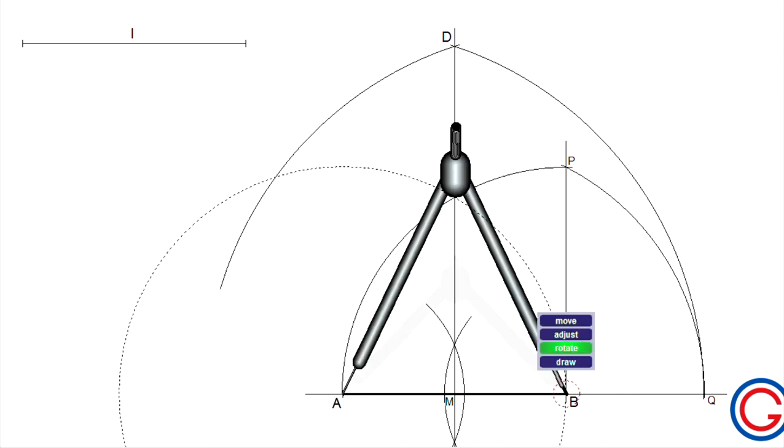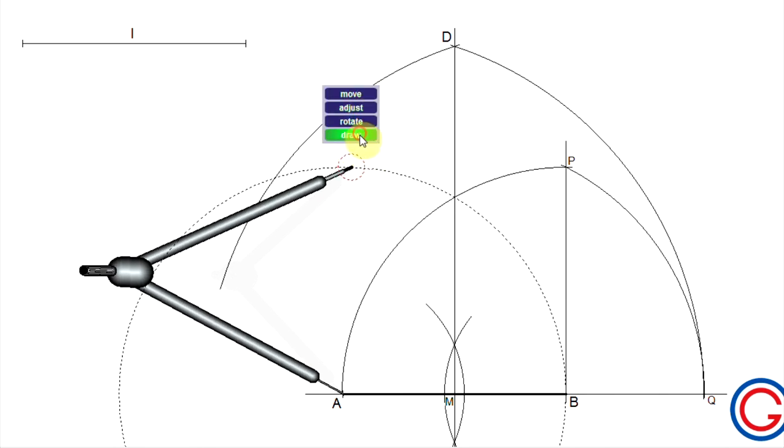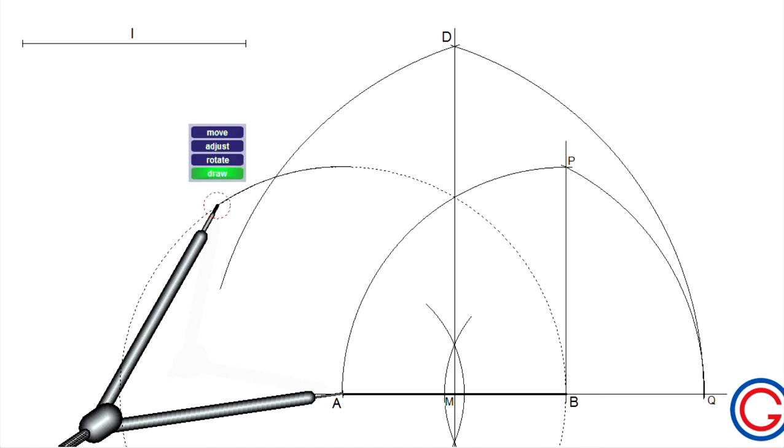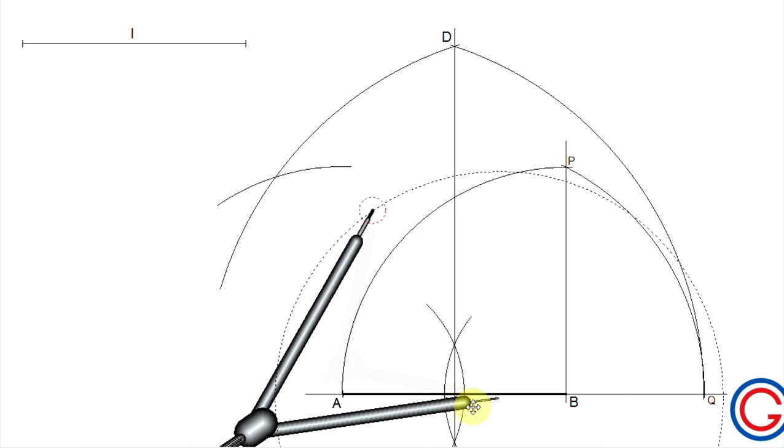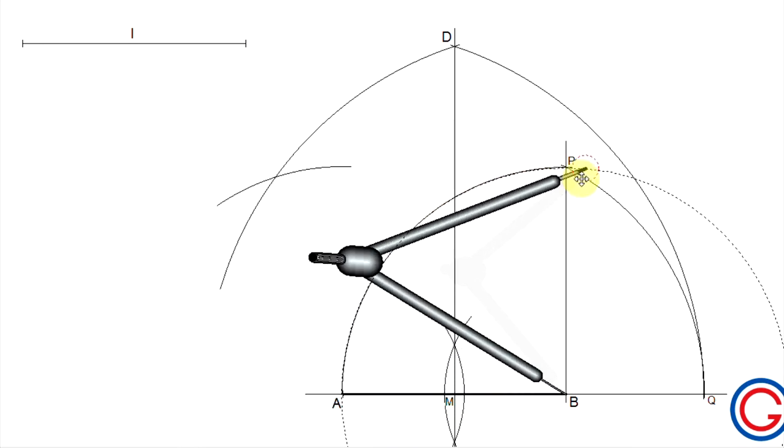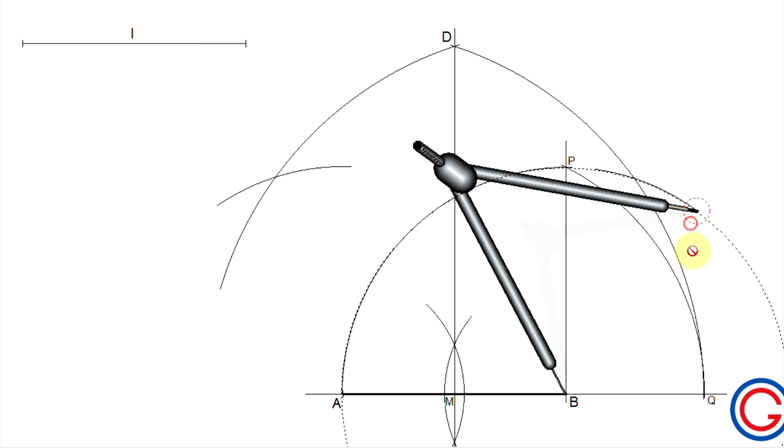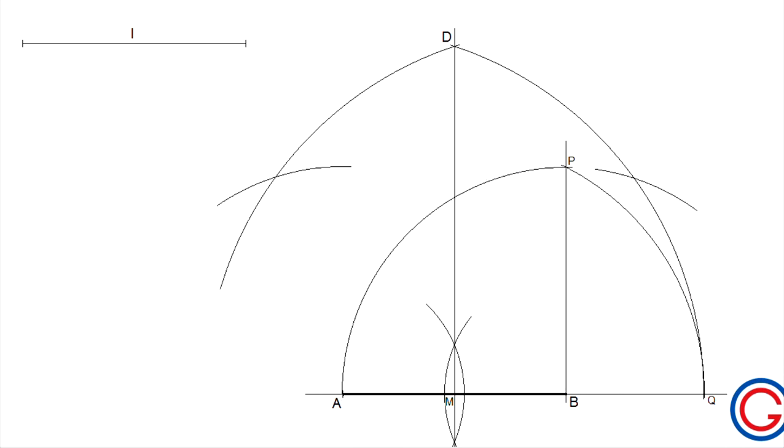Now, we must locate the other vertices of the pentagon. To do this, we must scribe two arcs of length AB, which will intersect our previously drawn arcs. Now, we repeat this process with our compass centered on point B, and scribe an arc to the right, until we intersect our previous arc, as shown in the video. So now we call these two points C and E respectively.